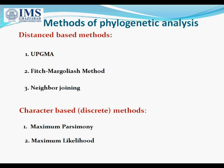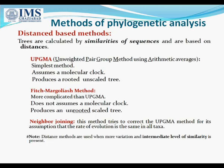There are basically two different types of methods of phylogenetic analysis: distance-based methods and character-based methods, which are also called discrete methods. In distance-based methods we have three types: the UPGMA method, the Fitch-Margoliash method, and the neighbor joining method. In character-based methods we have two types: maximum parsimony and maximum likelihood.